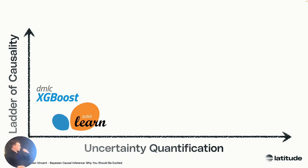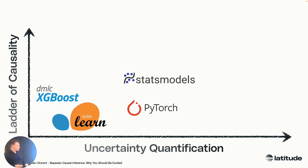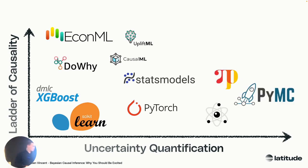Let's quickly divide some packages. I think everyone is familiar with scikit-learn and XGBoost. XGBoost already starts moving up a little bit. If we move more towards uncertainty quantification — like PyTorch, classic deep learning frameworks have some variational inference where you can start modeling uncertainties. Statsmodels, of course, econometrics, very classic — we start moving up there.